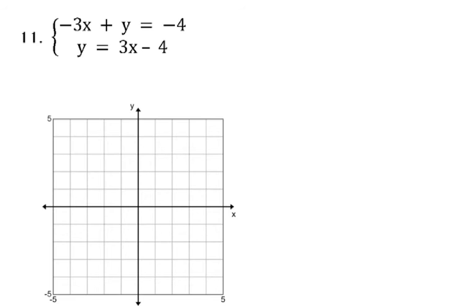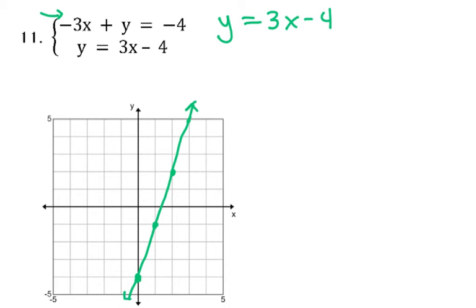Number 11: the first thing we're going to do is put the first equation in slope-intercept form so we know how to graph it. Get the y by itself and graph it. The y-intercept is the constant, and the slope is 3. All the points on that green line are solutions for that equation — there are billions of them. Now let's graph the second equation: y equals 3x minus 4. And you look and think, oh, that's exactly the same line.